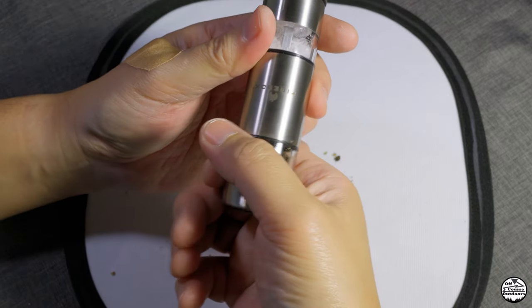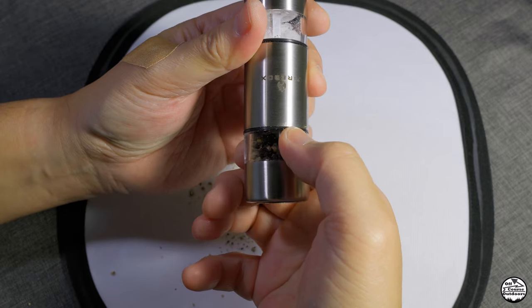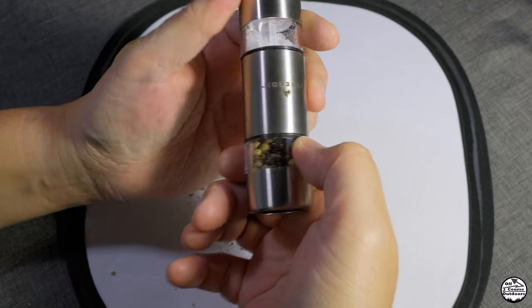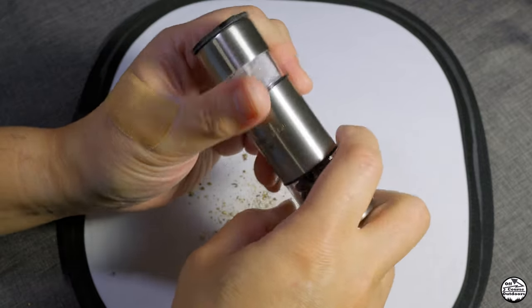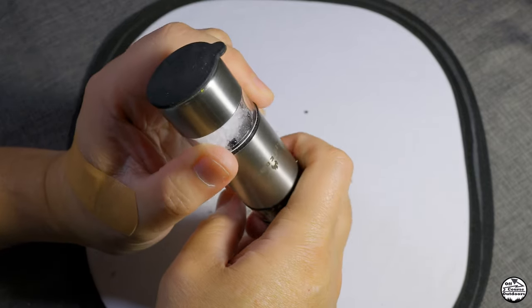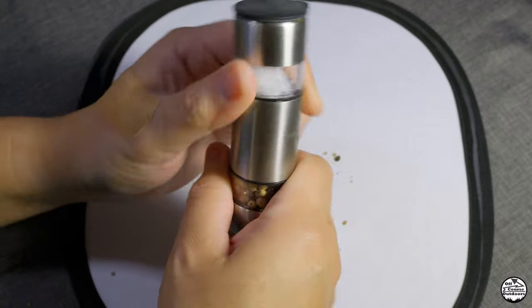So after using it a few times, there are a couple of things to note. When you grasp the bottom half, make sure you're squeezing on the clear plastic section. From what I can tell, the stainless steel protection is glued on the clear plastic.